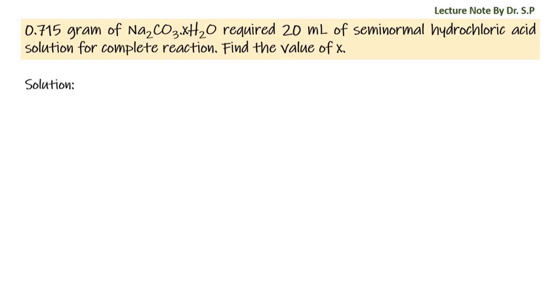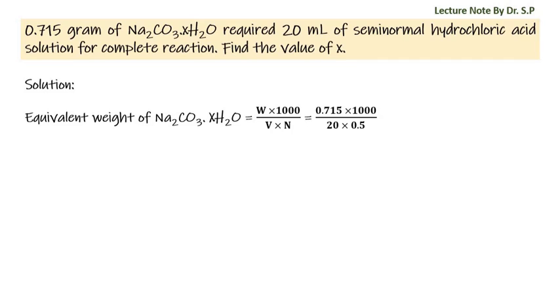Solution. We know that equivalent weight of Na2CO3.xH2O is equal to weight times 1000 by volume times normality. That is equal to 0.715 times 1000 by 20 times 0.5. That is equal to 71.5.